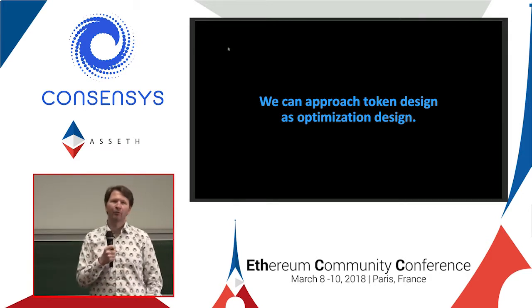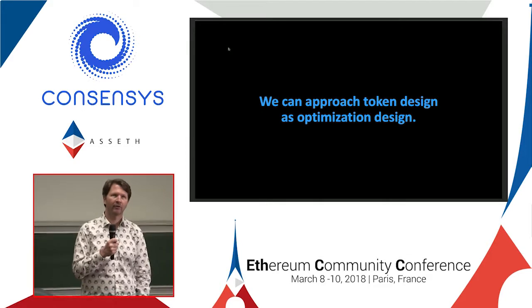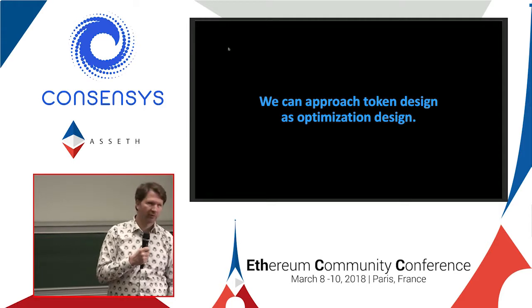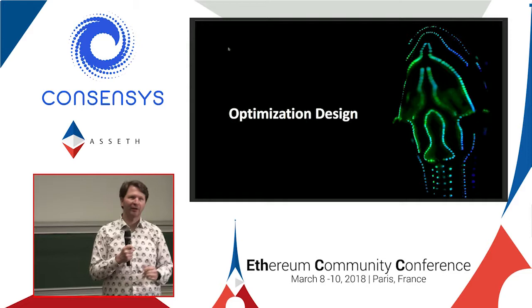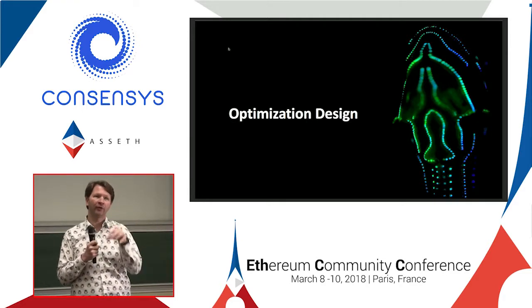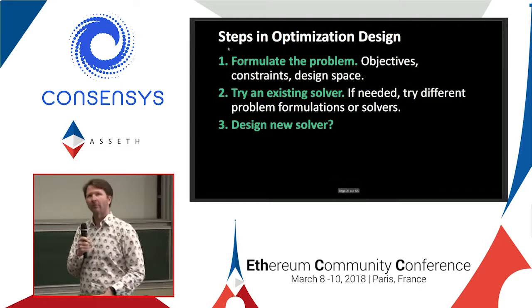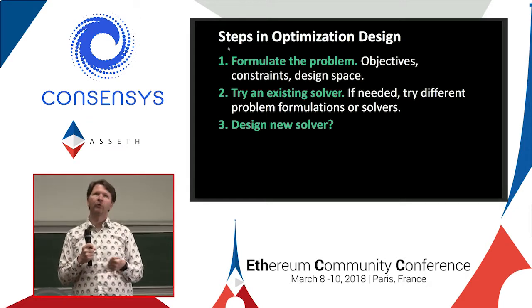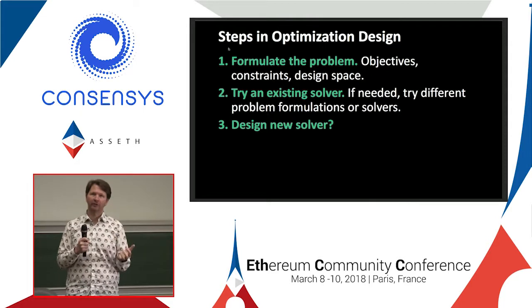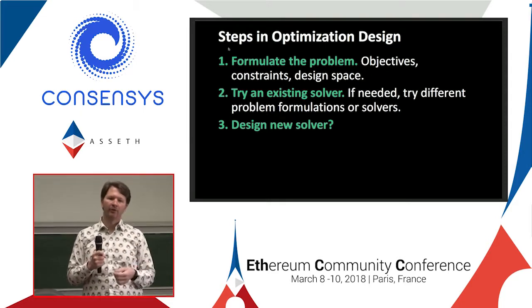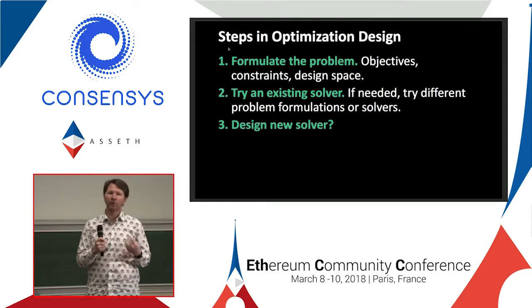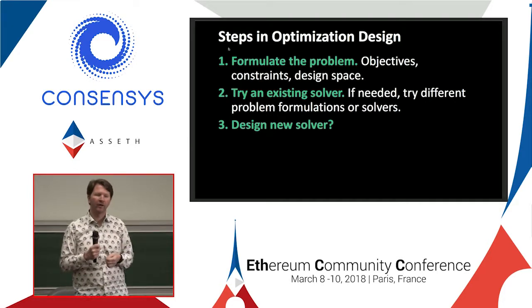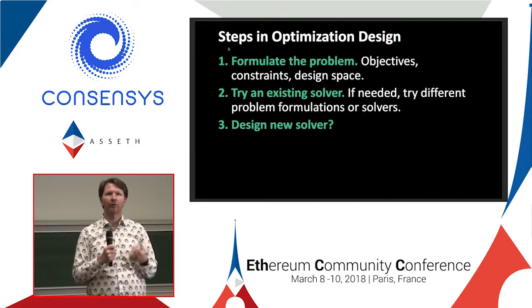When we realize this, we realize: if these things are so similar, let's approach token design as optimization design. There are three steps if you want to design an optimizer that optimizes successfully. First, you write down the problem — the goals, which are objectives and constraints, and the design space. Then you try an existing solver — you don't want to reinvent the wheel. And only if needed, do you design a new solver, because otherwise you're just wasting time.